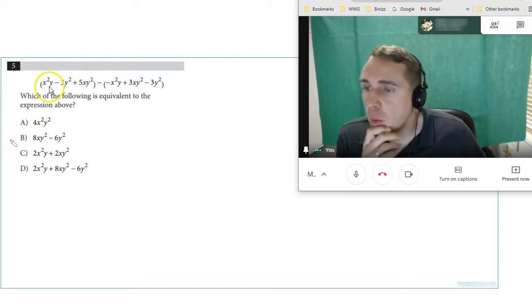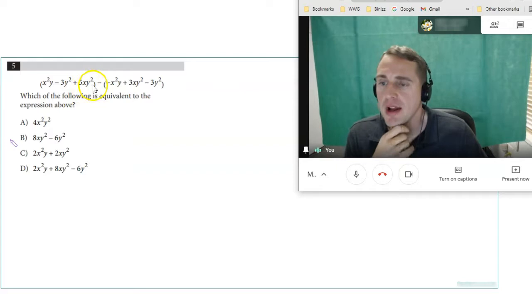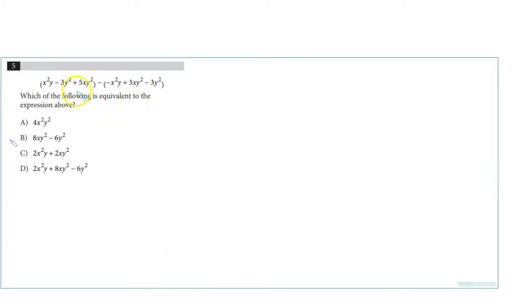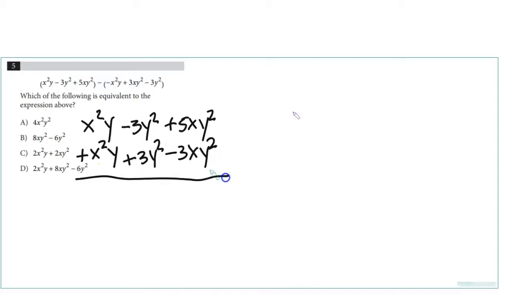Number 5: x²y minus 3y² plus 5xy² minus (negative x²y plus 3xy² minus 3y²). Which is equivalent to the expression above? Hopefully you know you can distribute this minus to the second set of parentheses. So that's x²y minus 3y² plus 5xy² plus x²y minus 3xy² plus 3y². When we add these up, I think these double up, that's 2x²y. These cancel, and then you get plus 2xy². 2x²y plus 2xy², I think that's choice C.